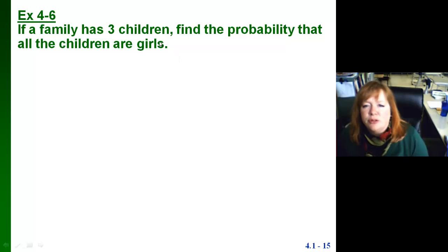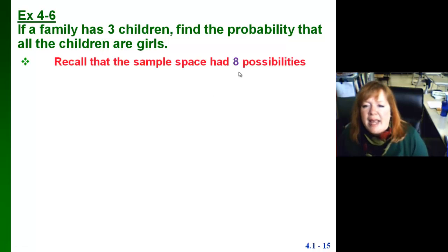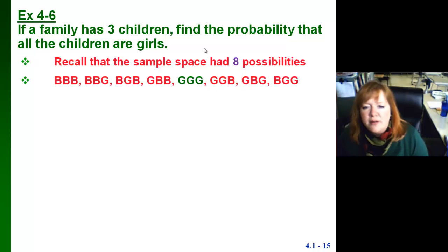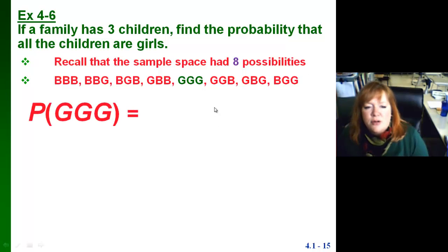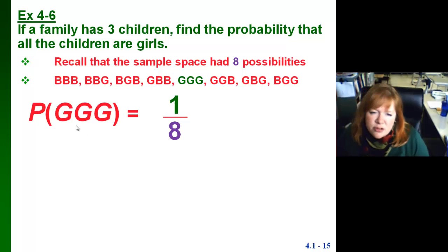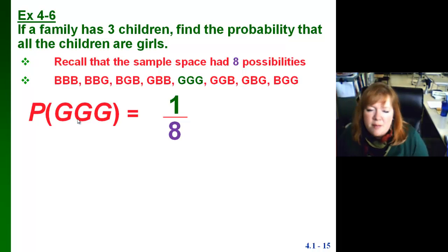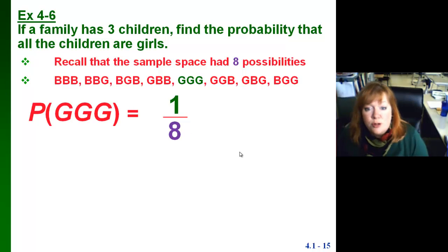What about the three children problem? Find the probability that all the children are girls. We know there were 8 possible outcomes in the sample space, and only one of those had 3 girls. So the probability of all girls — written P(GGG) — would be 1 out of 8. It doesn't have to be just one letter; it can be something more descriptive to the reader.